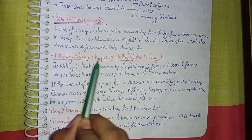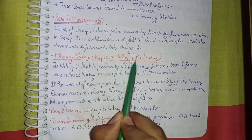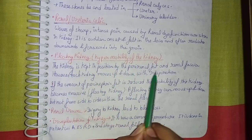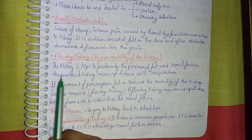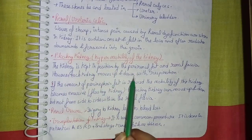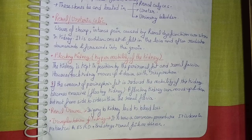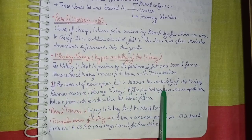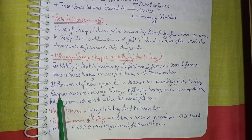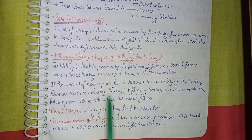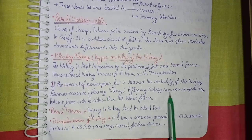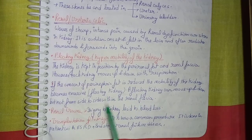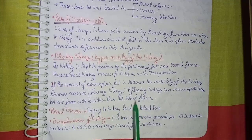Coming to floating kidney (hypermobility of the kidney): the kidney is kept in position by the perinephric fat and renal fascia. However, each kidney moves down with respiration. When the amount of perinephric fat is reduced, the mobility of the kidney becomes excessive — this is called a floating kidney. A floating kidney can move up and down but not sideways within the renal fascia.